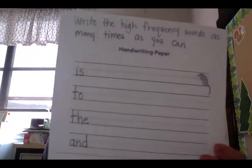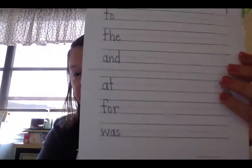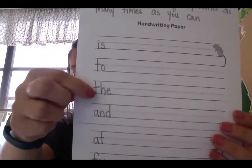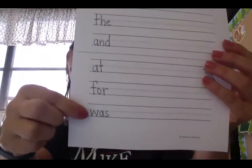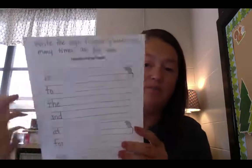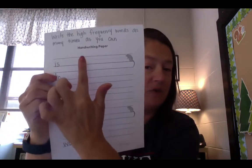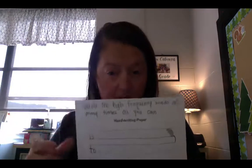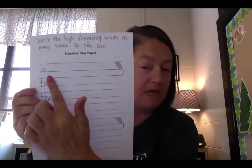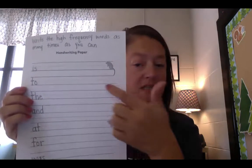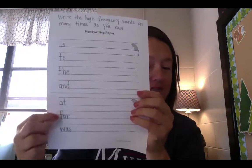We talked about some high frequency words and your work today in your packet for Monday. You're going to see a sheet with high frequency words on it: is, to, the, and, at, for, and was. Your job on this page is to write each word repeatedly across the line using a finger space between each word. So: finger space, write the word 'is,' finger space, write the word — all the way to the end of the line. Do this very neatly for all the words: the, and, at, for, and was.